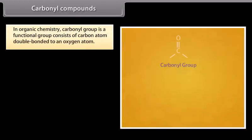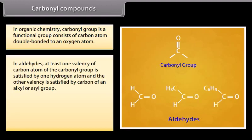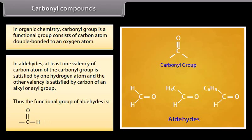In organic chemistry, a carbonyl group is a functional group consisting of a carbon atom double bonded to an oxygen atom. In aldehydes, at least one valency of the carbon atom of the carbonyl group is satisfied by one hydrogen atom, and the other valency is satisfied by carbon of an alkyl or aryl group. Thus, the functional group of aldehydes is CHO.